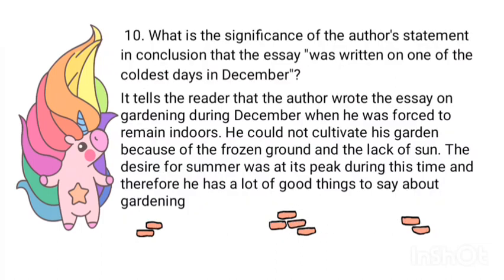What is the significance of the author's statement in conclusion that the essay was written on one of the coldest days in December? It tells the readers that the author wrote the essay during December when he was forced to remain indoors. He could not cultivate his garden because of frozen ground and lack of sun. The desire for summer was at its peak during this time, and therefore he had many good things to say about gardening.